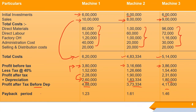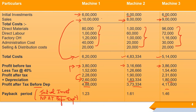Now we calculate the payback period. The formula is: Initial Investment ÷ Net Profit After Tax Before Depreciation. For Machine 1: 6,00,000 ÷ 4,88,000 = 1.23 years. Payback period is always expressed in years.